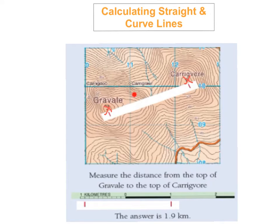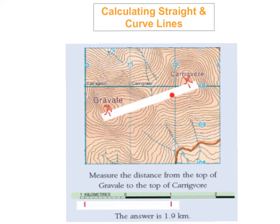It's not like a river that you've got to calculate that's windy, or a road or a motorway. It's just a straight line from one point to the other point. How you calculate it is: you get your ruler, place your ruler on one point and go all the way over to the other point, then measure the distance in centimetres from one point to the other.